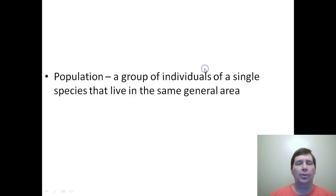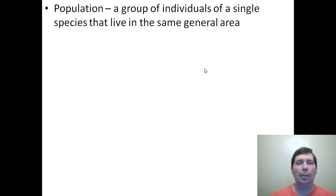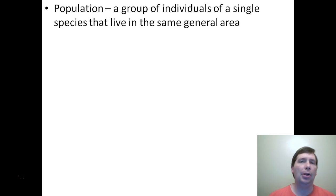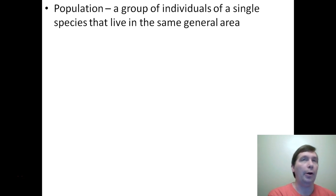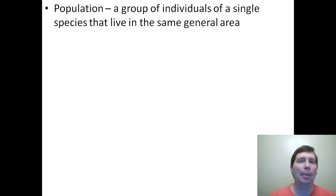So what is a population? The definition of a population is it's a group of individuals of a single species that live in the same general area. The population of a town fits this definition — we're talking about a group of humans that live in one area, Logan, Utah. But we also stretch the idea of population to plants and animals out in nature as well.